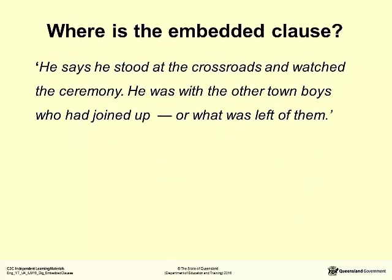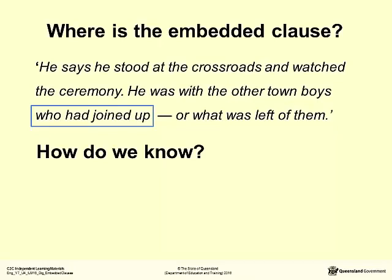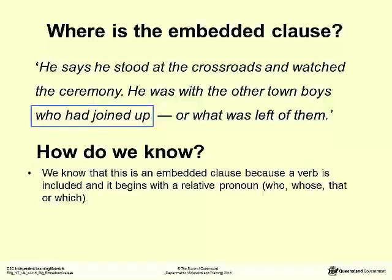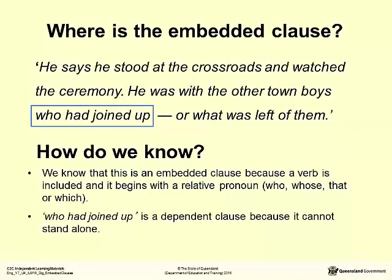This first example is from the picture book Memorial. He says he stood at the crossroads and watched the ceremony. He was with the other town boys who had joined up, or what was left of them. The embedded clause here is 'who had joined up.' We know that this is an embedded clause because a verb is included and it begins with a relative pronoun — who, whose, that, or which. 'Who had joined up' is a dependent clause because it cannot stand alone. It tells us more about the noun, boys.